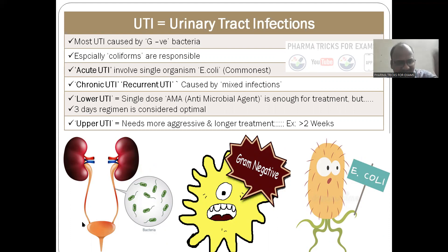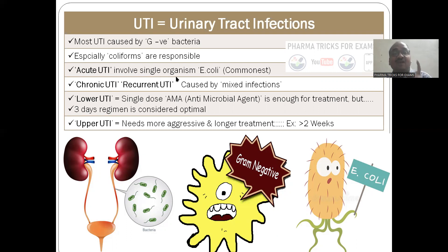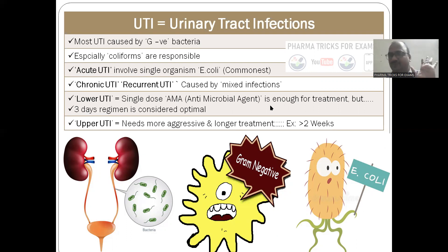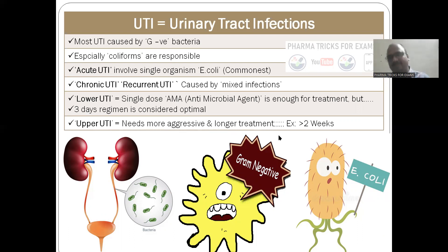Most urinary tract infections are caused by gram-negative bacteria — especially E. coli, and also Pseudomonas. Acute UTI involves E. coli predominantly. Chronic UTI is recurrent — the infection keeps coming back repeatedly, caused by mixed infections. Lower UTI: a single dose of an antimicrobial agent is enough. Three-day regimen can also be considered. Upper UTI needs more aggressive and longer treatment.